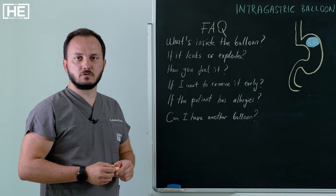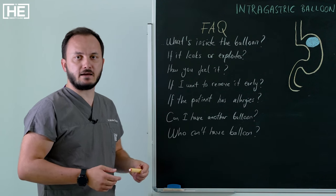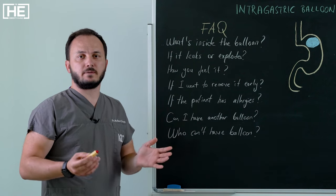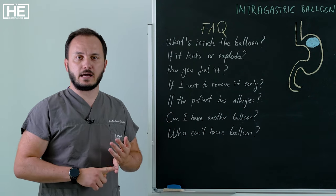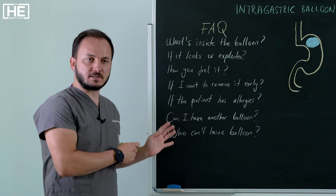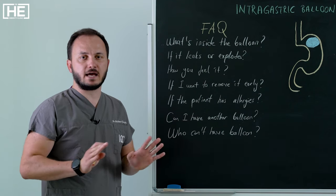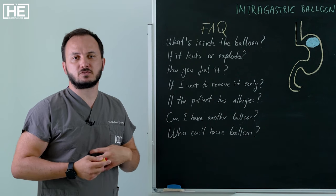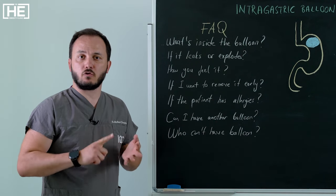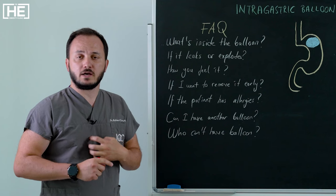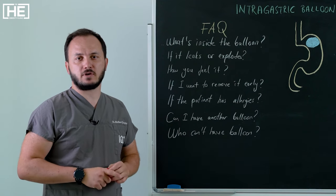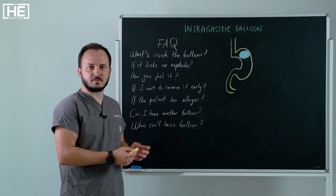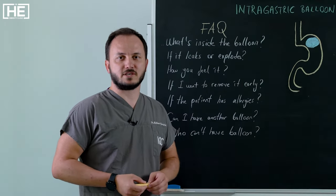Do all patients have balloon or who can't have balloon? We have some contraindications. Not all of them have balloons. If you had already intragastric or gastric surgeries, you cannot have balloons. Or if you have problems with your stomach like ulcers or bleeding points or huge hiatal hernias, you cannot have balloons. I try to explain and give you some information about intragastric balloon and types. Thanks for watching.